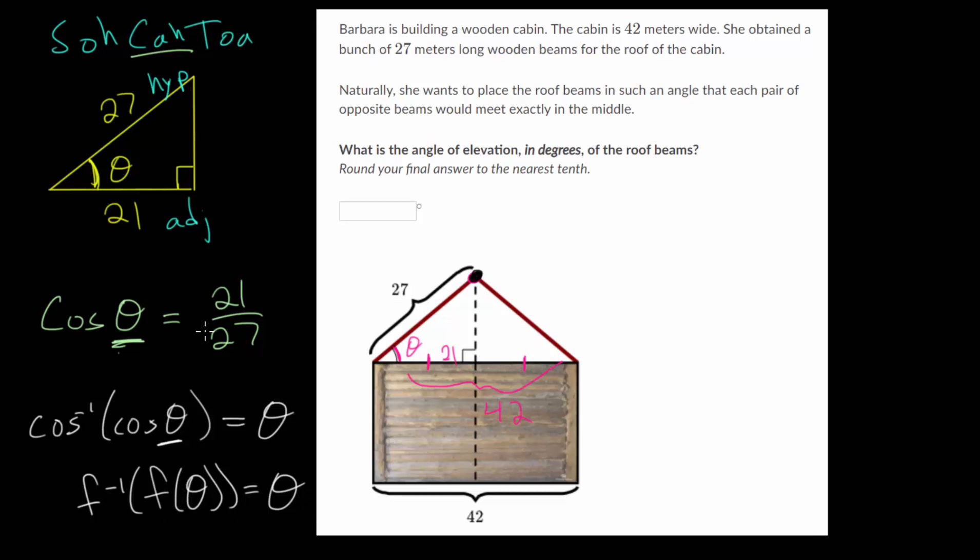So we need to do the same thing here. We need to take an inverse cosine of each side of the equation, and that way we can essentially get theta outside of the cosine function, and be able to solve for it.